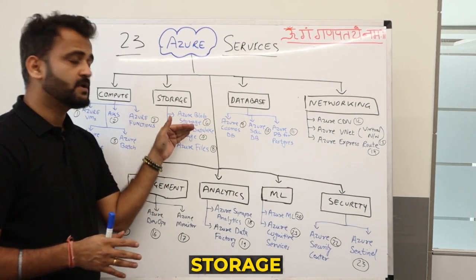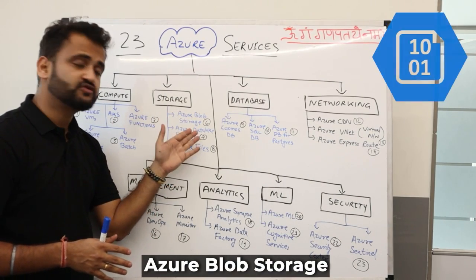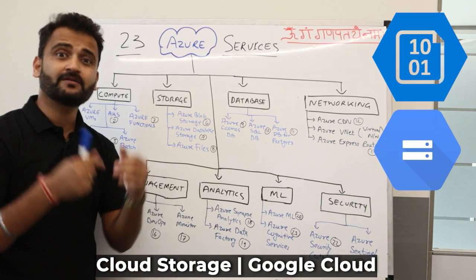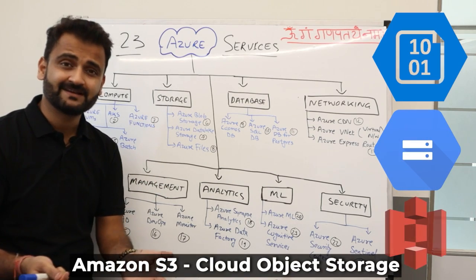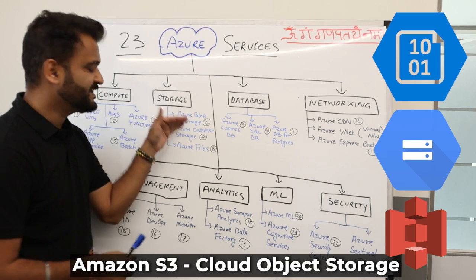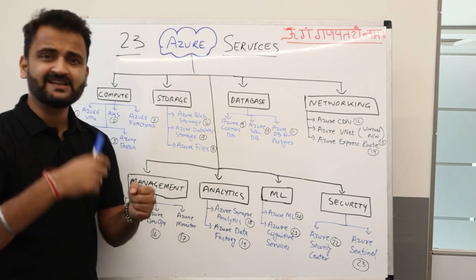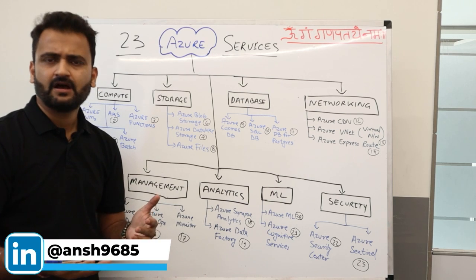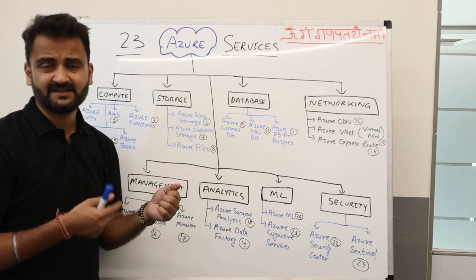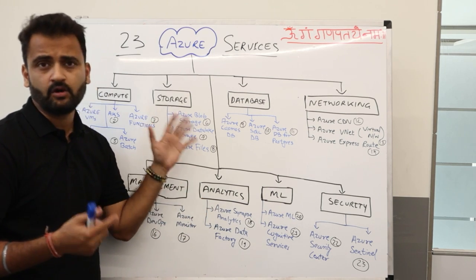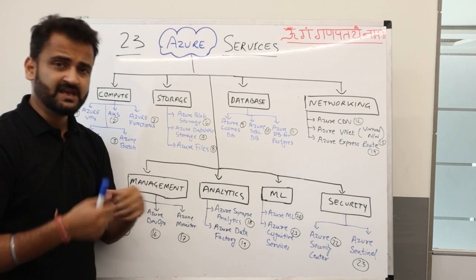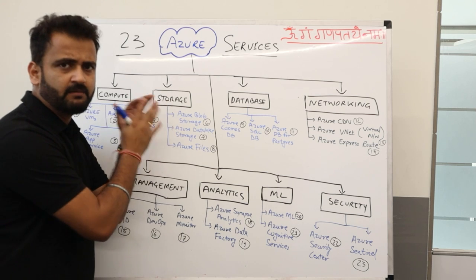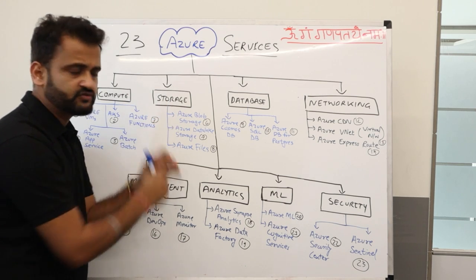Moving to storage, the number one service is Azure Blob Storage, equivalent to Cloud Storage on Google or S3 buckets on AWS. You can store your media files, images, audio, video, and any unstructured or semi-structured data. You can also upload Excel files, PDFs — whatever you want — Blob Storage is the place for it.